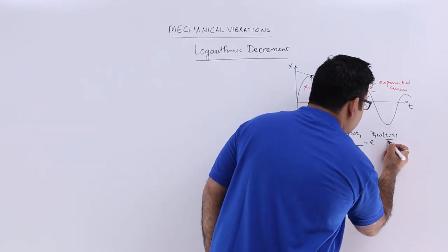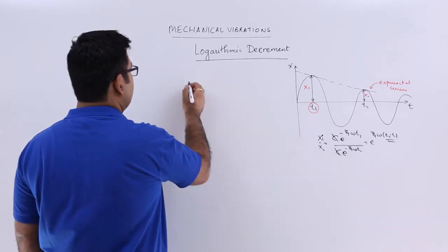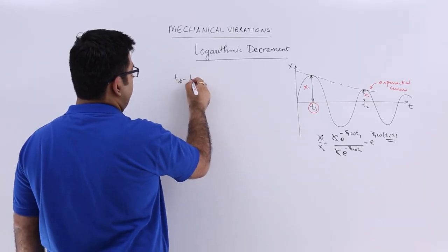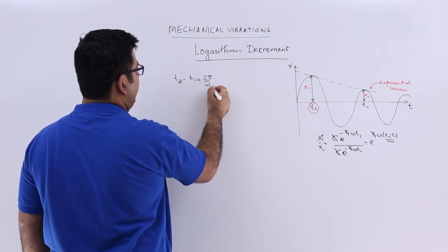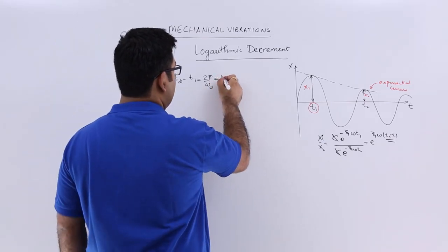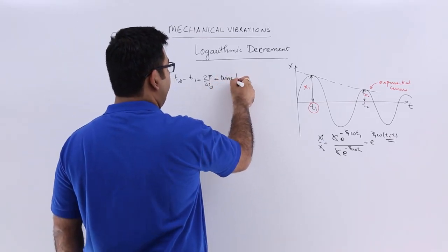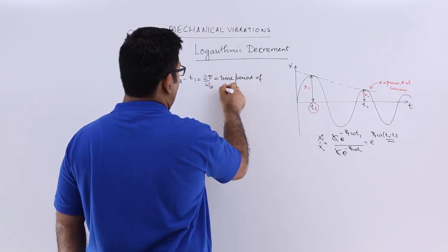Now, t₂ minus t₁ is the time period of oscillation. So t₂-t₁ equals 2π/ωd, where ωd is the damping frequency, and this is called the time period of oscillation.